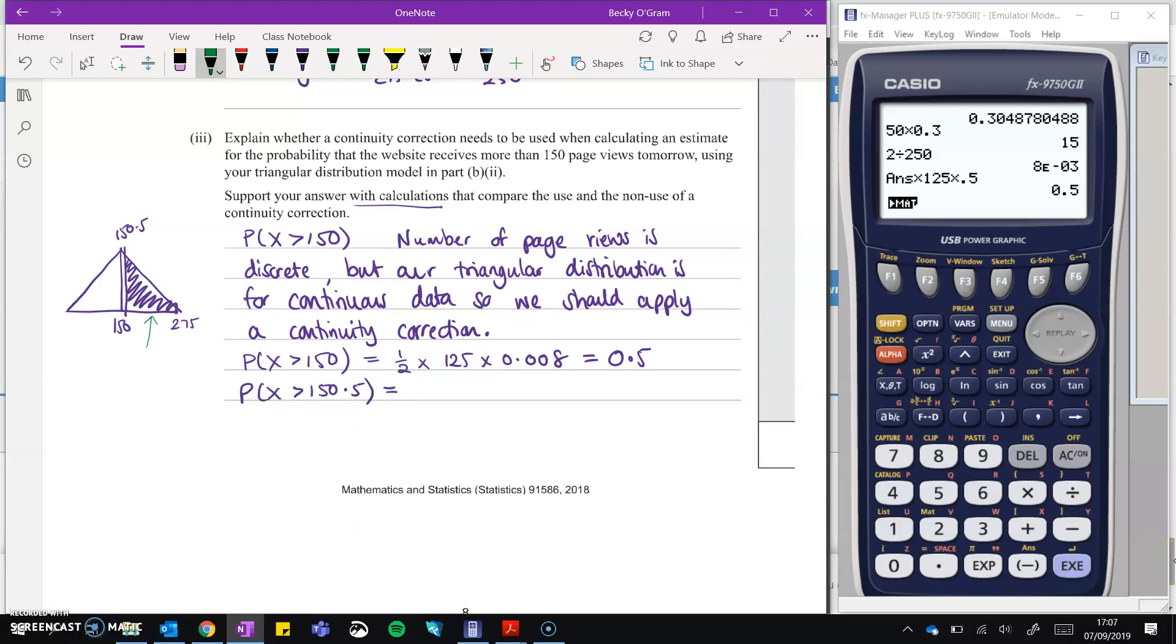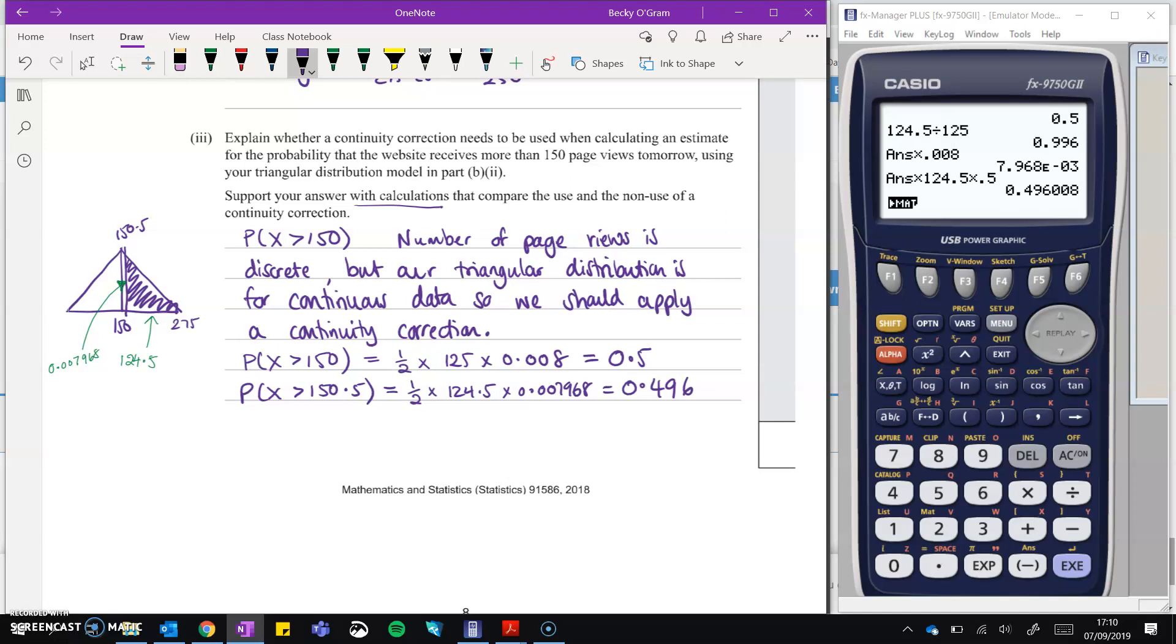So now we can work out the area of that triangle. So the base here will be, instead of it being 125, it's going to be 124.5. And the height will then be 0.007968, which you can either do by similar triangles, which you can see my working out for here, or you can use the formula on your formula sheet for heights on a triangular distribution. Okay, so switching back to working this out, we will do half times 124.5 times 0.007968. And that comes to 0.496.